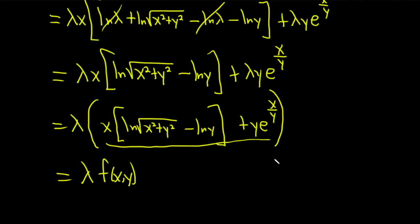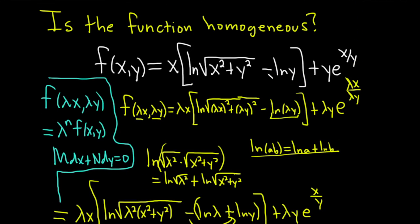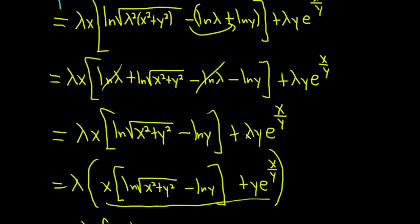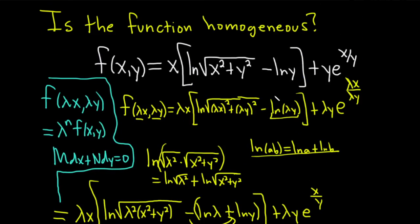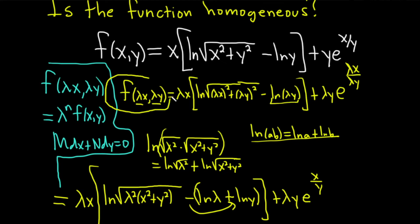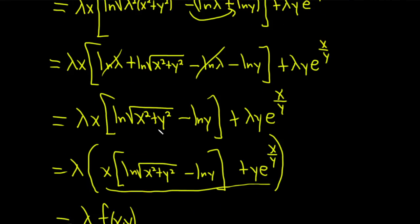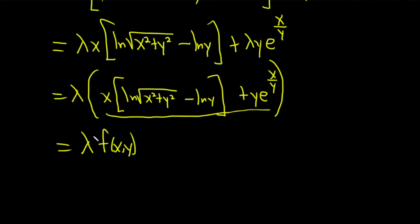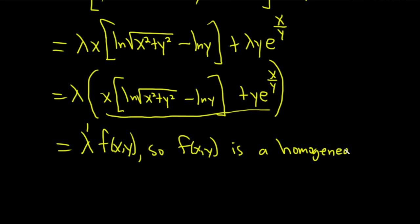Let's go back and double check. x times all of that plus y times e to the x over y is exactly what we have in the original function — yes, it matches. And since the exponent on lambda is 1, then n equals 1. So f(x, y) is a homogeneous function of degree 1.